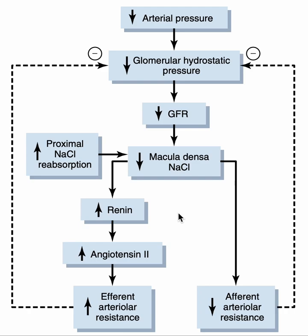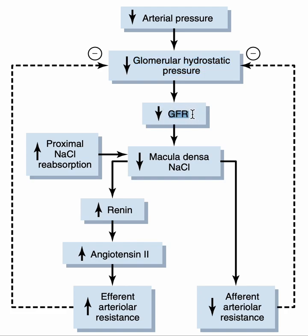So how does the kidney do this job? When the arterial pressure is decreased, this results in decreased glomerular hydrostatic pressure. When the hydrostatic pressure within the glomerulus is reduced, there is decreased filtration from the glomerulus into Bowman's capsule, which will ultimately lead to a decrease in GFR.